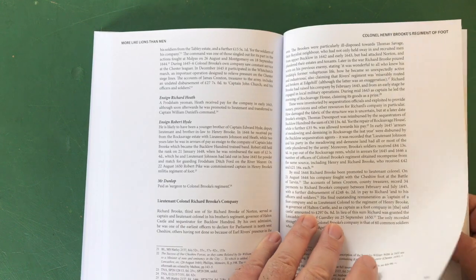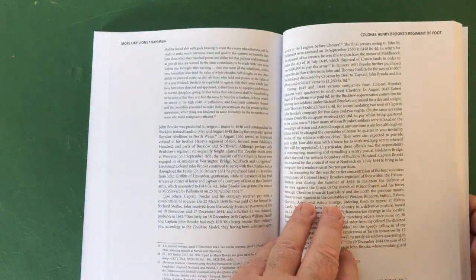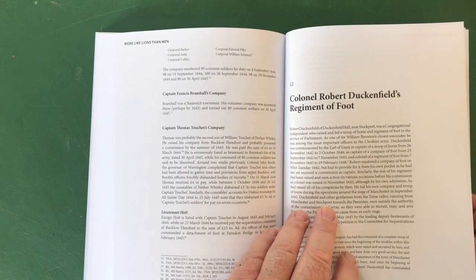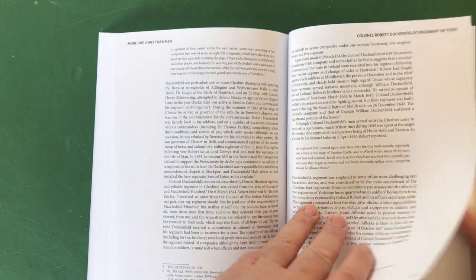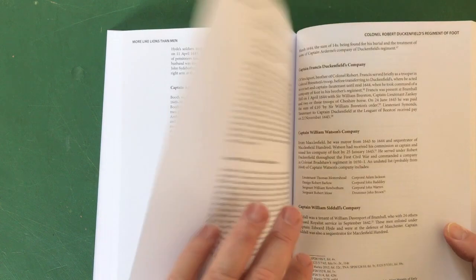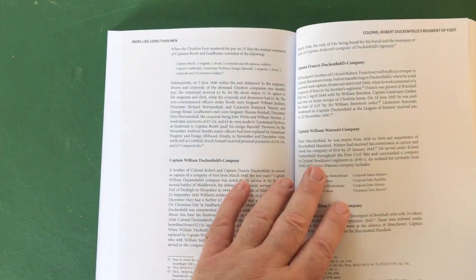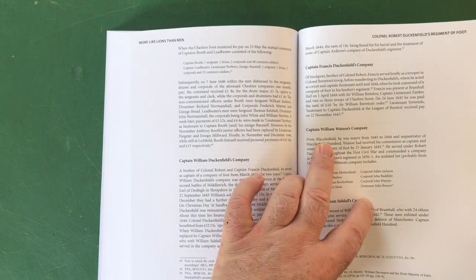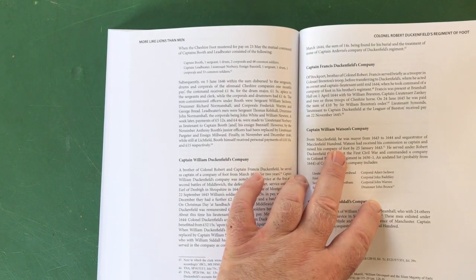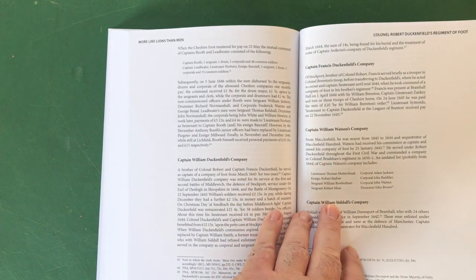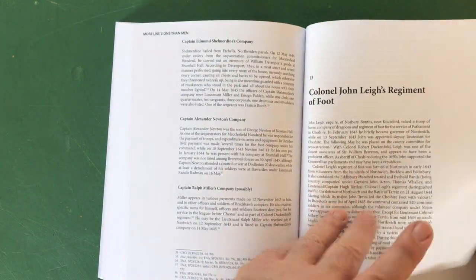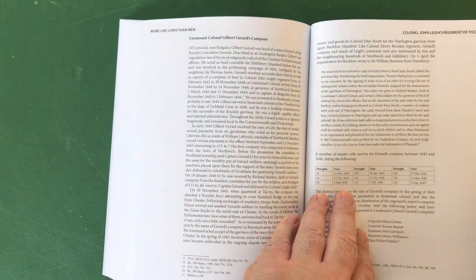That's phenomenal, you know, the payments they received, where they were, where they went, what happened to them, did they survive, did they die, who were they associated with. Colonel Robert Duckenfield's Regiment of Foot - this is absolutely phenomenal work, hats off. Here we are: Captain William Watson's company from Macclesfield. He was mayor from 1643 to 1644 and sequestrator of Macclesfield Hundred. Watson had received his commission as captain and raised his company of foot by the 25th of January 1643. He served under Robert Duckenfield...